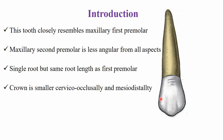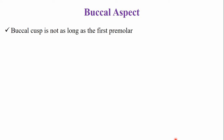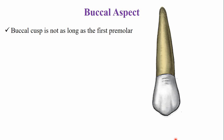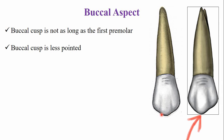The crown of the maxillary second premolar is smaller cervico-occlusally and mesiodistally as compared to the first premolar. From the buccal aspect, the buccal cusp is not as long as the first premolar because the cervico-occlusal dimension is less. The cusp tip is also less pointed compared to the maxillary first premolar.